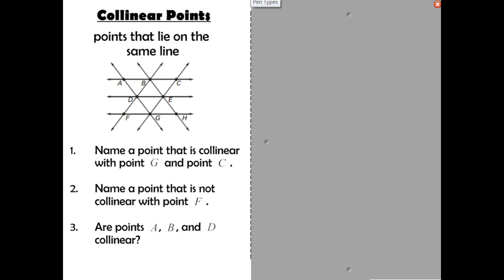Next, we want to talk about a term, collinear points. Collinear points are points that lie in the same line. Now, remember this by co- meaning together, linear means line. So you have points together on a line. So, I want you to go ahead and take a look at this diagram, pause, answer the three questions, and then check back with me and see if you got them right.